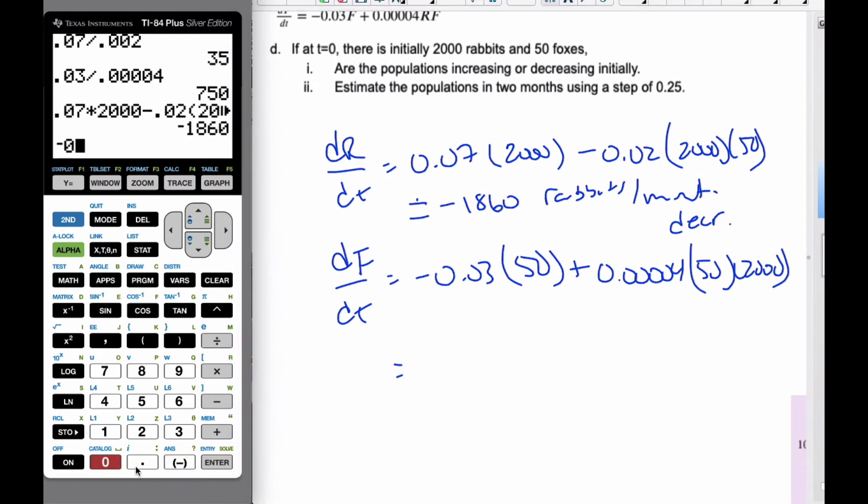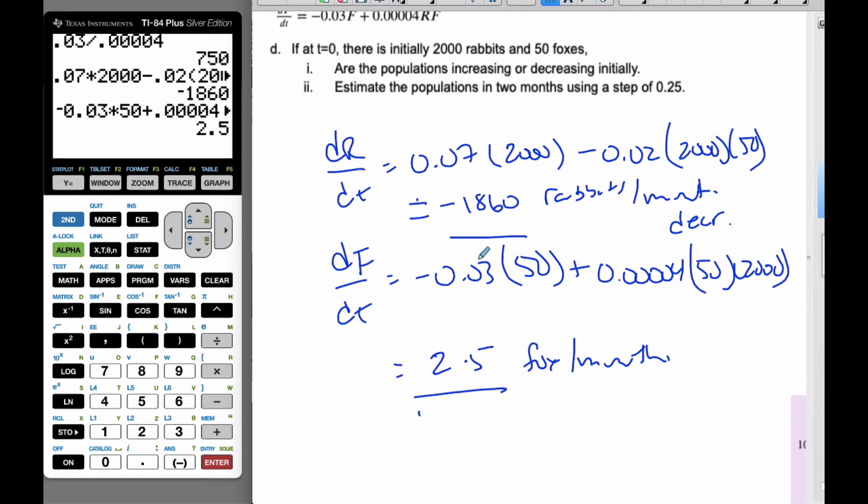When I think about my foxes, I get negative 0.03 times 50 plus 0.00004 times 50 times 2,000, which gives me a positive 2.5 foxes per month. So the foxes are increasing initially and the rabbits are decreasing initially. This is part D part i.